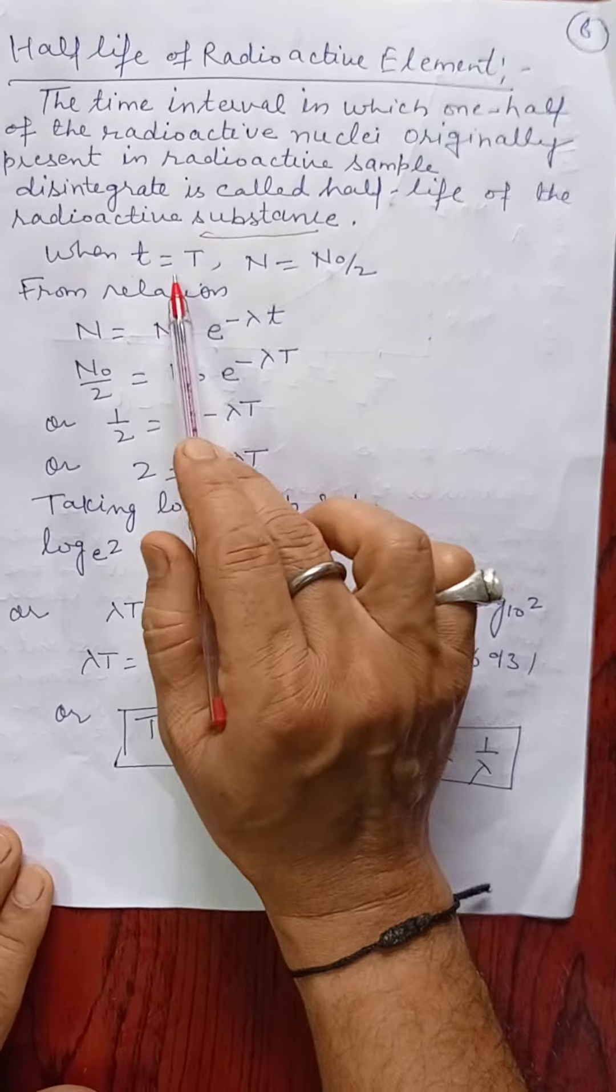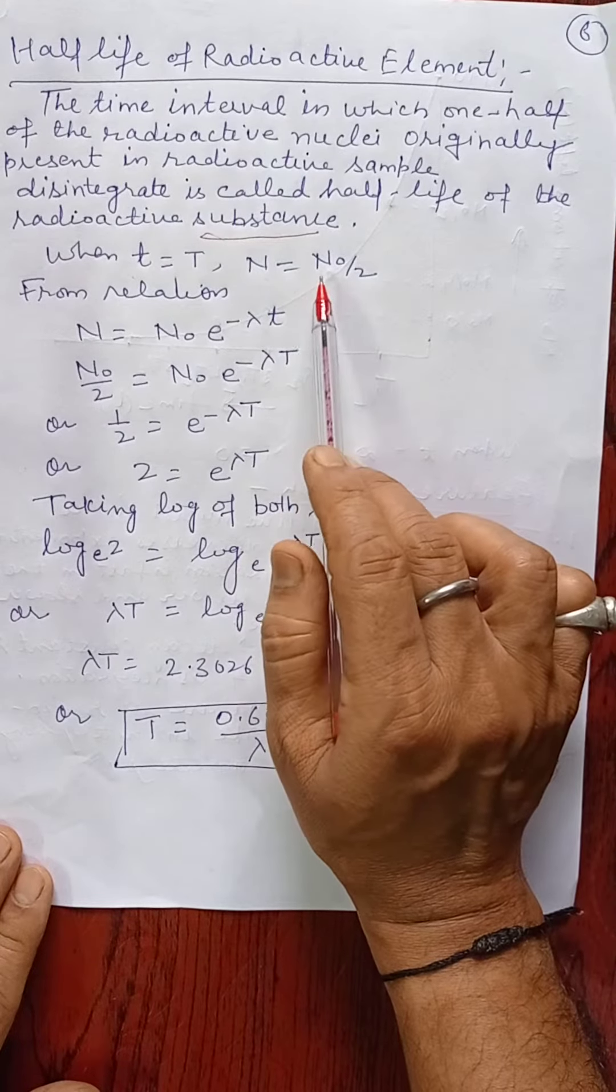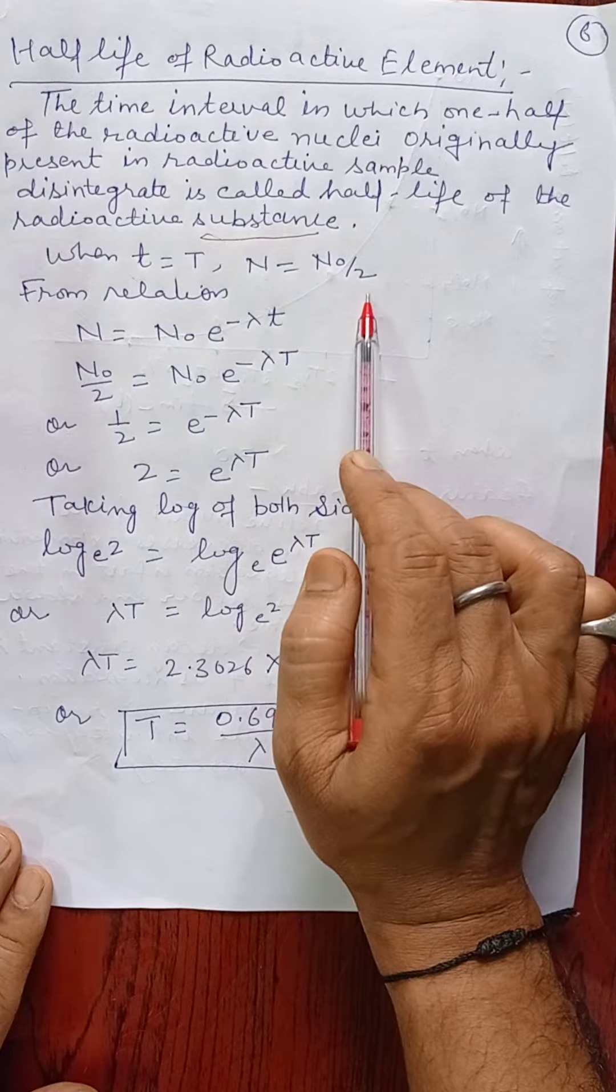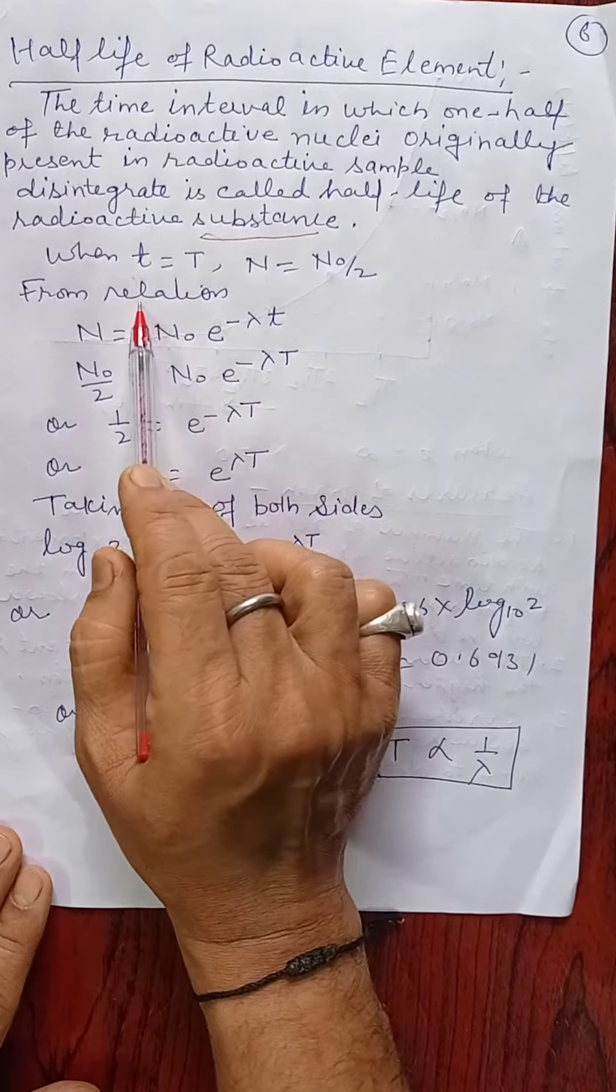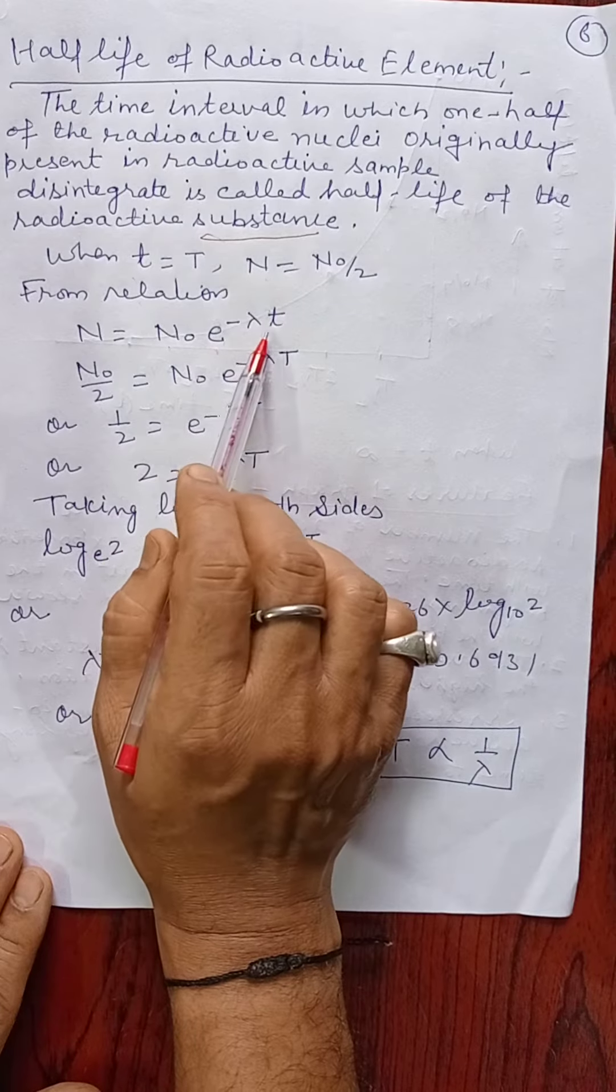Suppose T equals capital T, then N becomes half, just half of whatever atoms are present initially, that is N₀ upon 2. From the relation discussed in the last video, N equals N₀ e raised to the power minus λT.